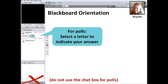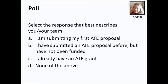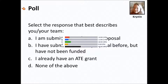Now we're going to look at polls. If we have a polling question, be sure you don't type the letter answer into the chat box. Instead, navigate to the icon to the right of the hand and select the letter that coincides with your answer. Please select the response that best describes you or your team. Remember, you want to go up near the hand icon and you'll see A, B, C, or D — navigate up to that hand box and to the right, and you'll see the drop-down box for the polls.